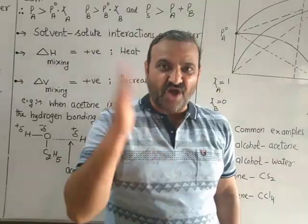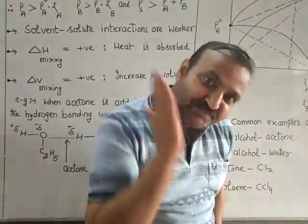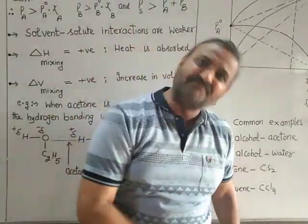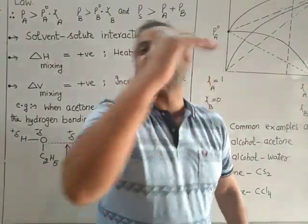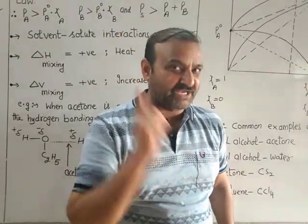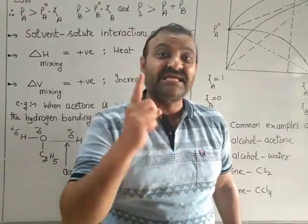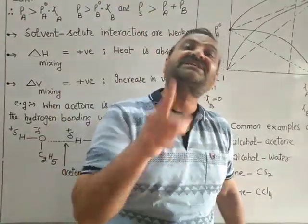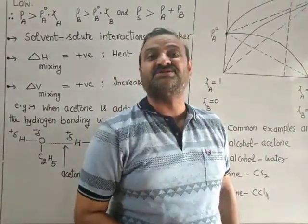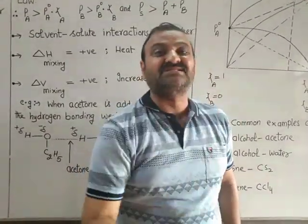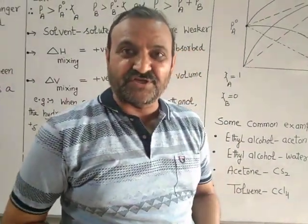To summarize: in a non-ideal solution, we measure the vapor pressure of the solvent or solute by experiment, and measure the vapor pressure of the same component by Raoult's law. If the vapor pressure determined by experiment is greater than the vapor pressure determined by using Raoult's law, such non-ideal solutions are called non-ideal solutions with positive deviations.